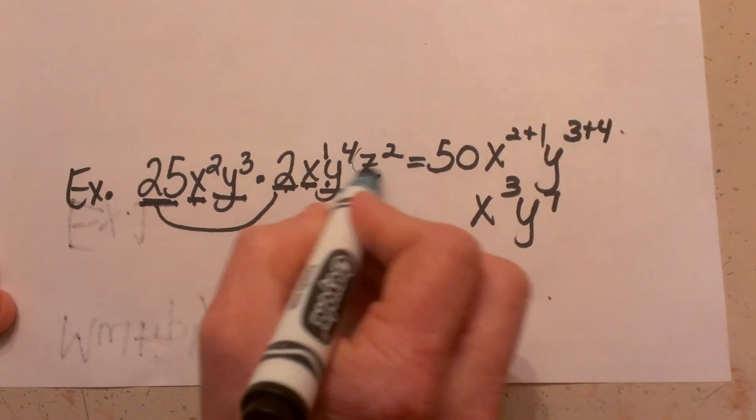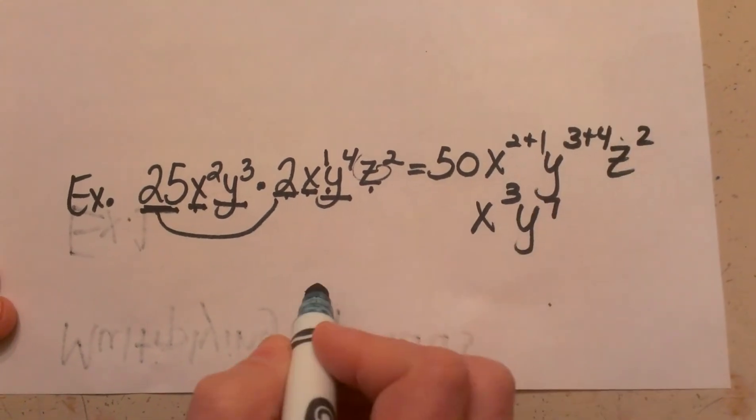And then this one only has a z on one term so I am just going to bring that over as z squared.